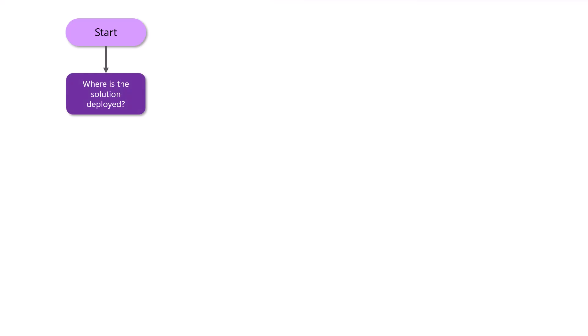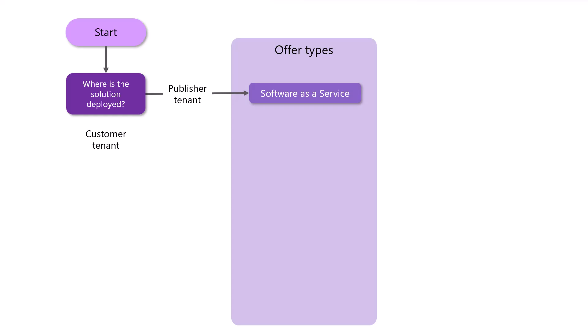We'll start here at the beginning and ask the question first: where will our solution be deployed? We have two options — one being the publisher tenant, one being the customer tenant. Starting with the publisher tenant side of things, if your offer is to be published within your own tenant and served to your customers, that's a SaaS application. So the appropriate offer type is a software as a service, or SaaS, offer type.